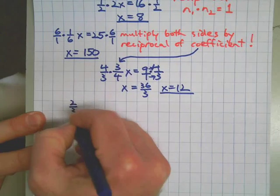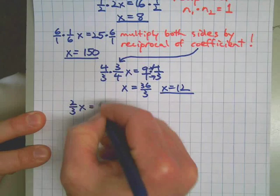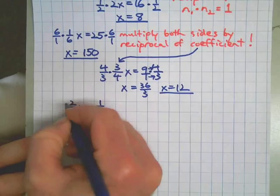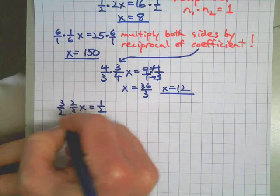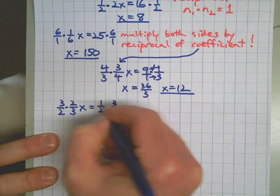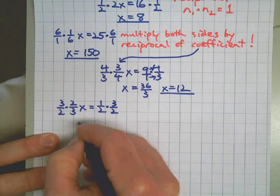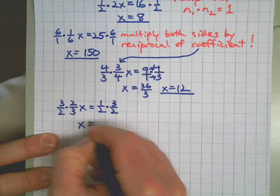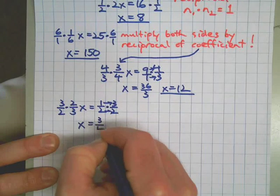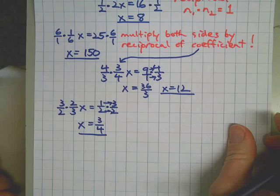One more example: 2 thirds x equals 1 half. Grip it and flip it — multiply both sides by the reciprocal 3 over 2. This makes 1 on the left side, and then we multiply straight across on the right. We get 3 fourths. X equals 3 fourths.